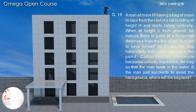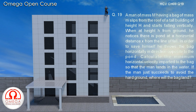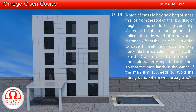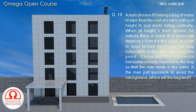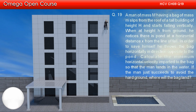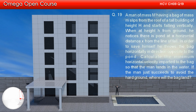A man of mass M having a bag of mass m slips from the roof of a tall building of height H and starts falling vertically. When at a height h from the ground, he notices there is a pond at a horizontal distance x from the line of fall. In order to save himself, he throws the bag horizontally in the direction opposite to the pond.